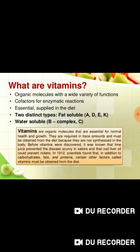There are two distinct types of vitamins: fat-soluble and water-soluble. Fat-soluble vitamins are A, D, E, and K. Water-soluble vitamins include the B complex group and vitamin C.